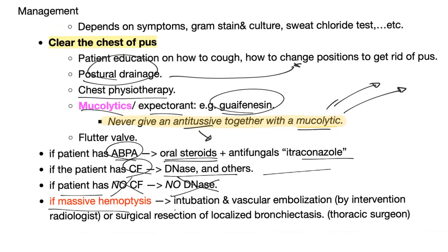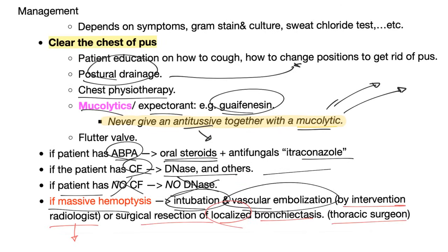If there is massive hemoptysis, intubate, protect the other lung from blood, and you may need vascular embolization done by an interventional radiologist, or surgical resection if the disease is localized. If diffuse, surgical resection is not possible — this is done by a thoracic surgeon.